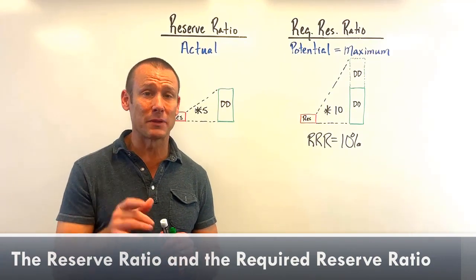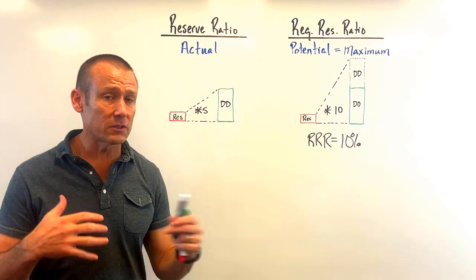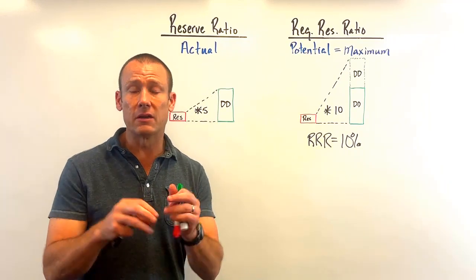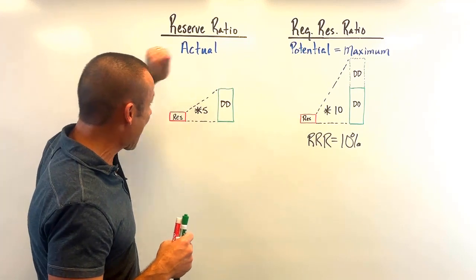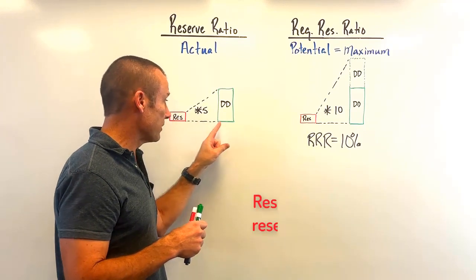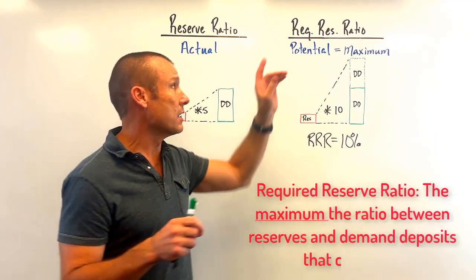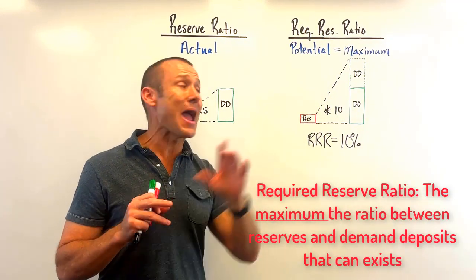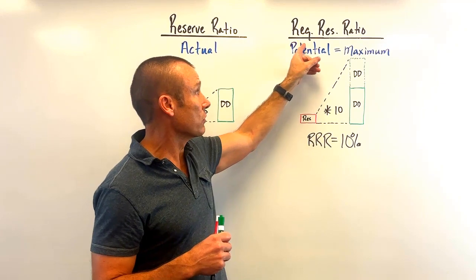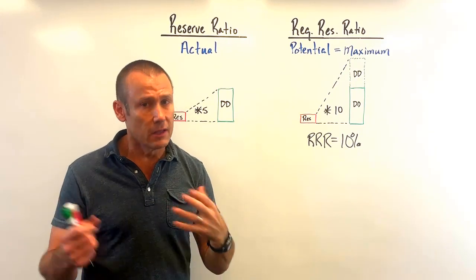In this video I'm going to quickly explain the difference between the reserve ratio and the required reserve ratio. These are two terms we might come across in textbooks that sometimes cause confusion. In a nutshell, the reserve ratio is focused on what's actually happening inside the banking system — the actual ratio between reserves and demand deposits. The required reserve ratio is focused on the potential, or maximum, relationship between reserves and demand deposits.